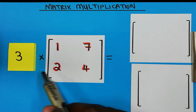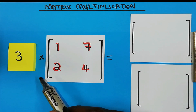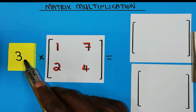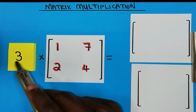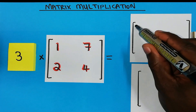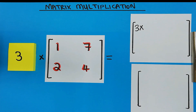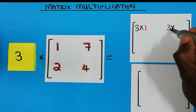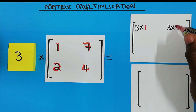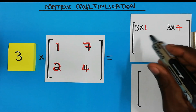When you have a condition where you multiply a matrix by a number, this is how you go about it: you multiply every element of the matrix by that number. So it will be 3 multiplied by 1, then 3 multiplied by 7, and 3 multiplied by 2.